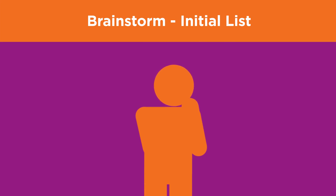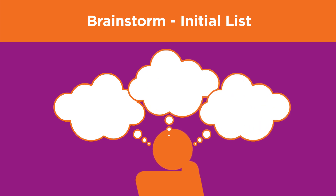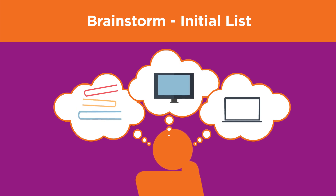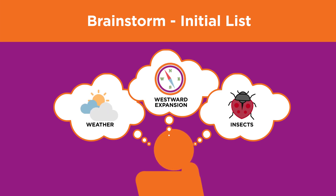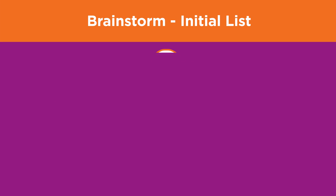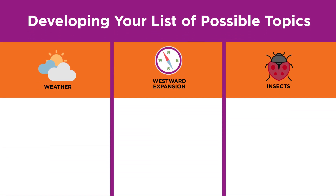The first step is to brainstorm interesting topics that are related to your assignment. When you're coming up with your topic, try to think of a few different ideas that you'd be interested in studying. Maybe you've read or heard news items about these topics, or maybe you talked about them in a class, such as weather, westward expansion, or insects.